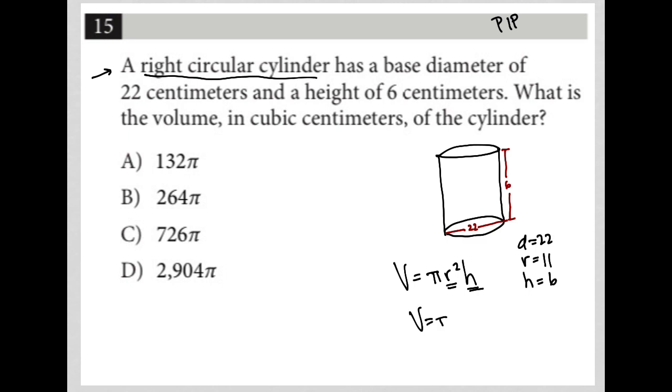So I have V equals π. Instead of r squared, it's going to be 11 squared, and then times 6 instead of h. 11 squared is 121. So I have π times 121 times 6. And then 121 times 6 is 726.